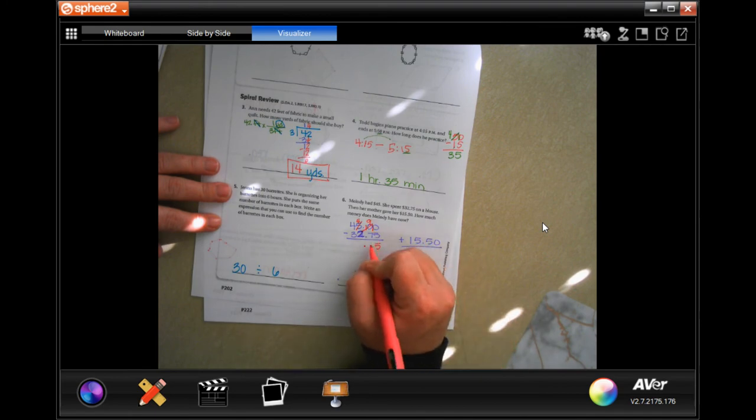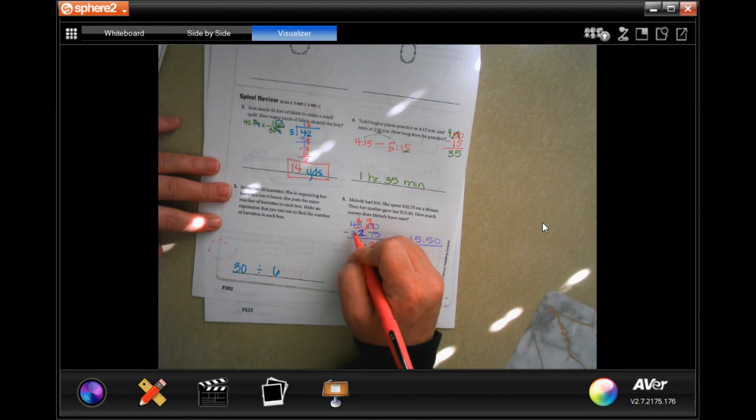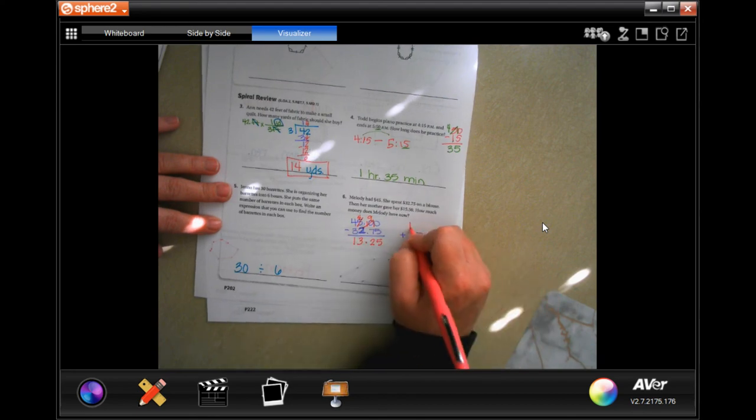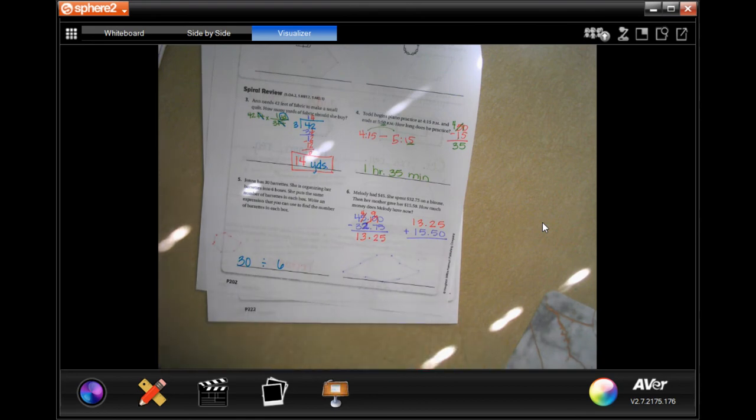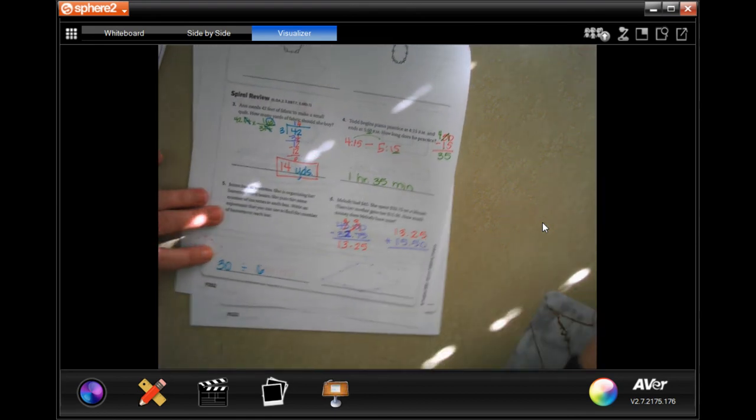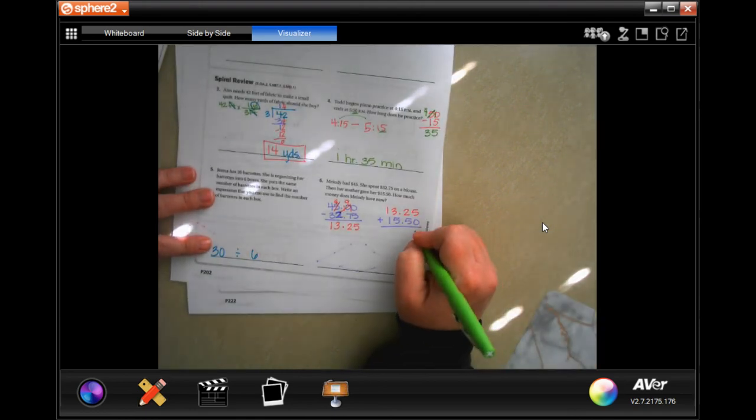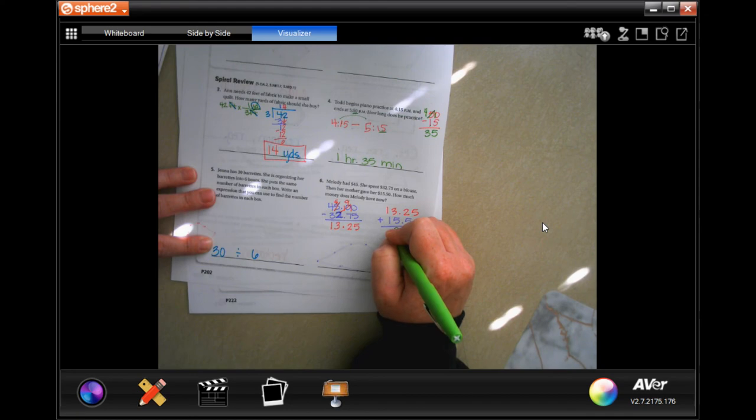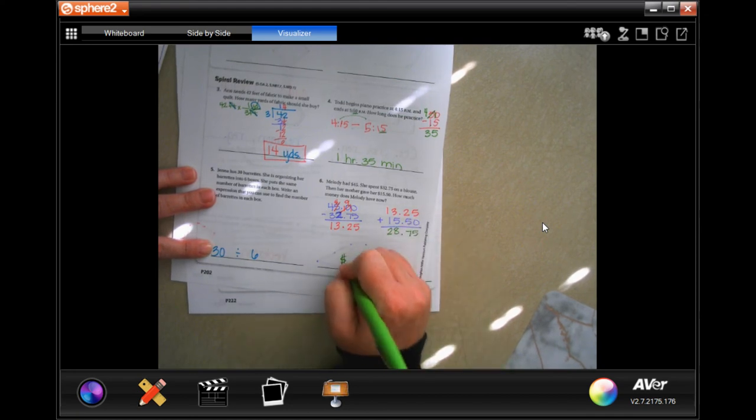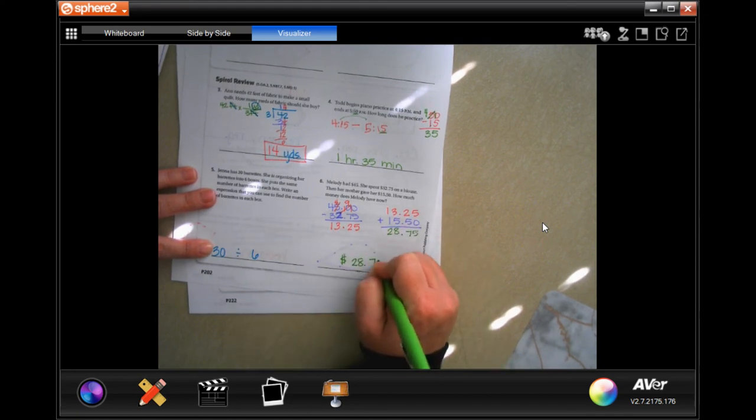So now drop my decimal. Ten minus five is five, nine minus seven is two, four minus two is three, and four minus three is one. We're just going to add those up. Drop our decimal. Five, seven, eight, two - 28 dollars and 75 cents.